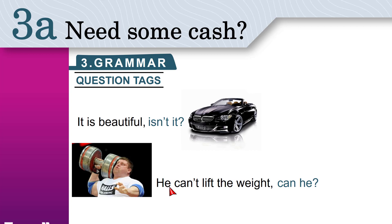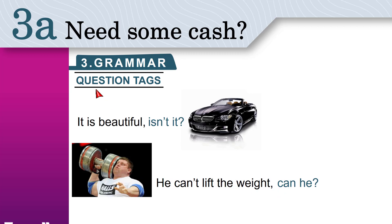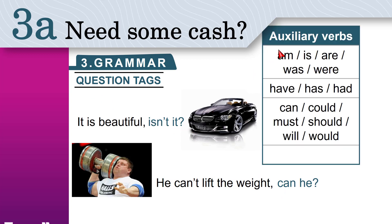Or we use question tags when we're not sure or surprised — 'He can't lift the weight, can he?' means I'm surprised he's trying. To make question tags, first find the auxiliary verb. The auxiliary verbs are: am, is, are, was, were, have, has, had, can, could, shall, should, will, would, must. If the auxiliary verb is affirmative, make the question tag negative: 'It is... isn't it?'